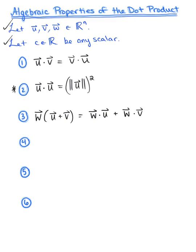Property number four explores how if we have the dot product of a vector and a scalar multiple of a vector, we can play around with different orders to our advantage. If we have the scalar multiple c times vector u, dotted with vector v, this is equivalent to vector u dotted with c times vector v, or — my favorite — keeping the scalar on the outside: c multiplied by the dot product of u and v. I always like this last form because it helps keep the numbers smaller.